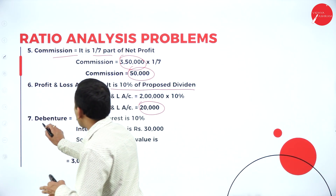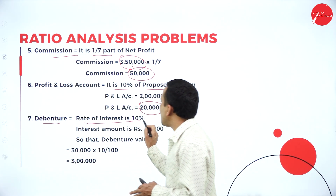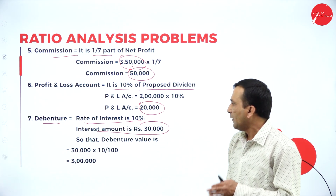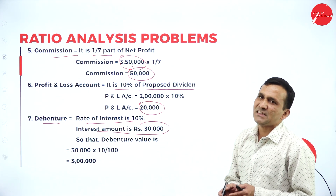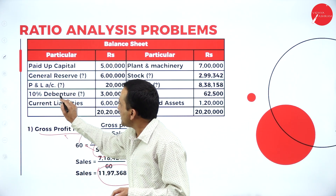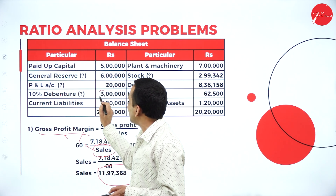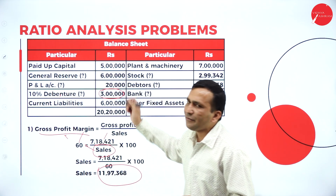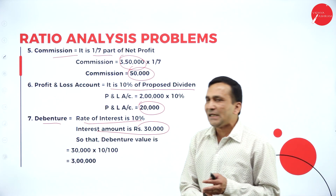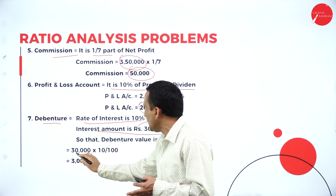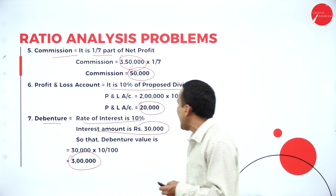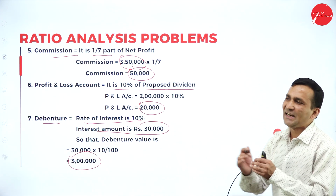For the debenture, the rate of interest is 10% and the interest amount is 30,000, because the debenture value is clearly specified in the question. The 10% debenture value shows a question mark — 3 lakhs is the missing value. We calculate: 30,000 is 10% of the debenture, so 30,000 divided by 10% gives us the debenture value of 3 lakhs.